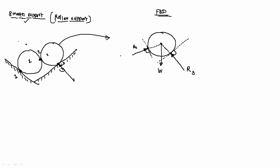For sphere one, the common reaction R2 acts in the opposite direction and passes through the center of sphere one, perpendicular to the tangent line. At contact point one, the reaction is perpendicular to the inclined surface — which is tangent to the sphere — and passes through the center. The self-weight acts in the negative Y direction. This is called a smooth support, which is similar to the roller support — it offers only one reaction.